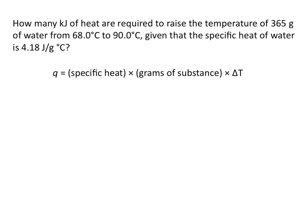We know that Q is equal to the specific heat times the grams of the substance times the change in temperature. The specific heat is 4.18 joules for every gram degree Celsius, meaning 4.18 joules of energy are required to raise 1 gram of water 1 degree Celsius. We have 365 grams of water, and since specific heat is in joules per gram degree Celsius and our sample is in grams, the units of grams cancel out.